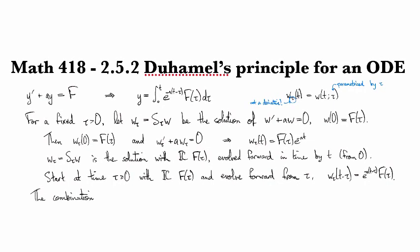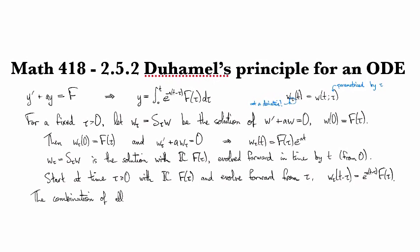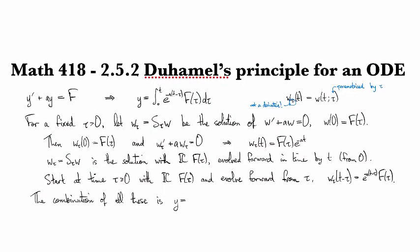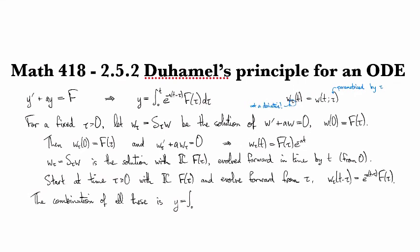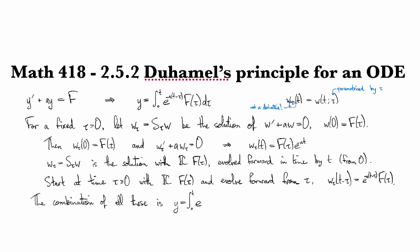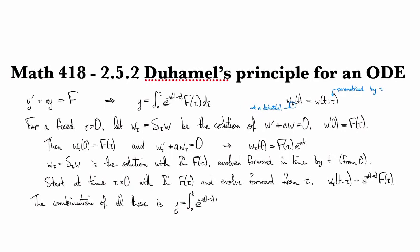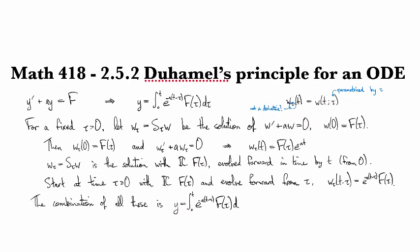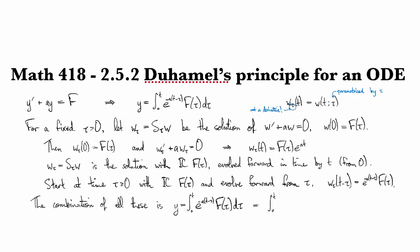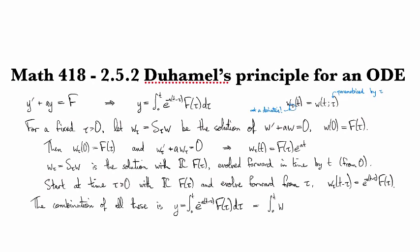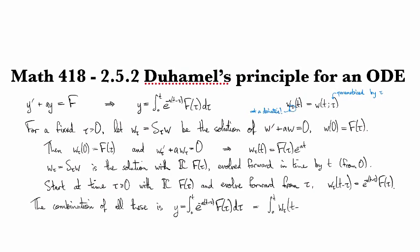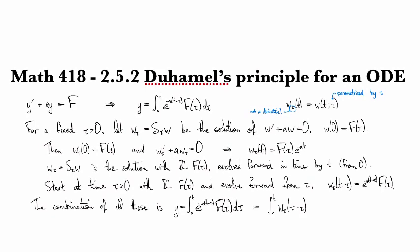And so if we take all these and we integrate them together to find the combined effect, we get that Y is the collection or the integration from zero to T of E to the minus A T minus tau, F of tau, D tau. And so what we got there is the integral from zero to T of the shifted and delayed function, W tau T minus tau.